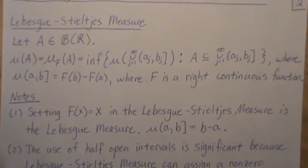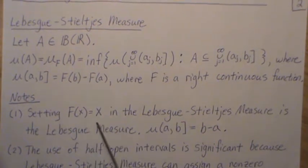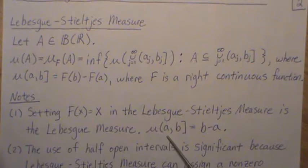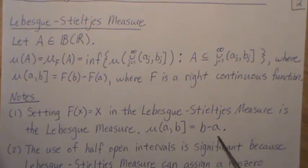Setting F(x) = x in the Lebesgue-Stieltjes measure gives the Lebesgue measure. So then μ(a,b] becomes just this difference, b minus a—it's the length of that interval, and that's the Lebesgue measure.